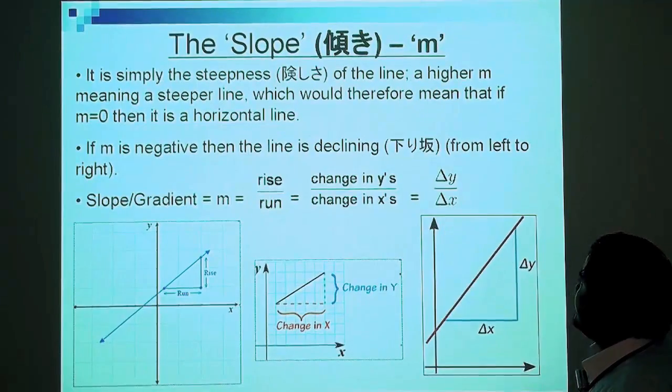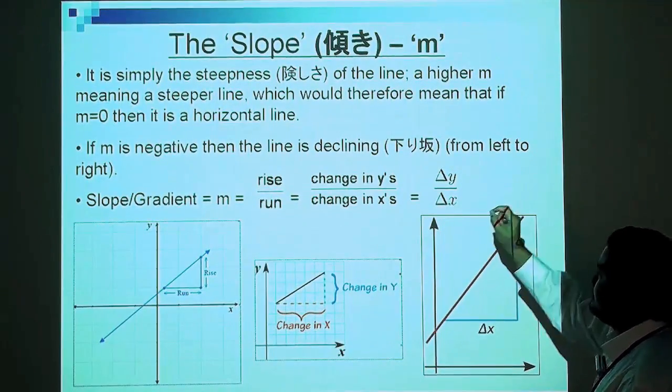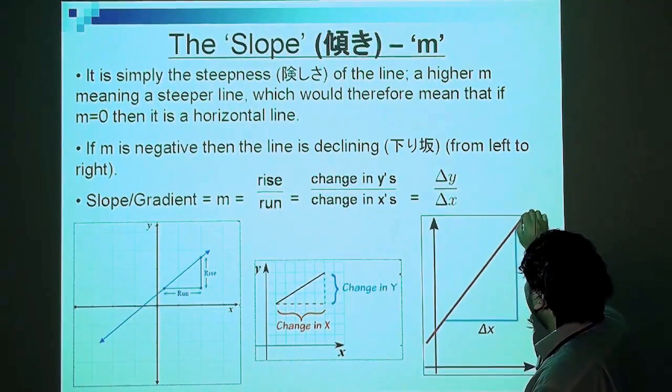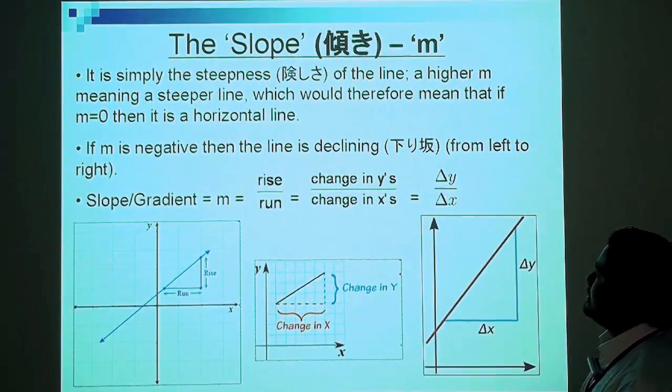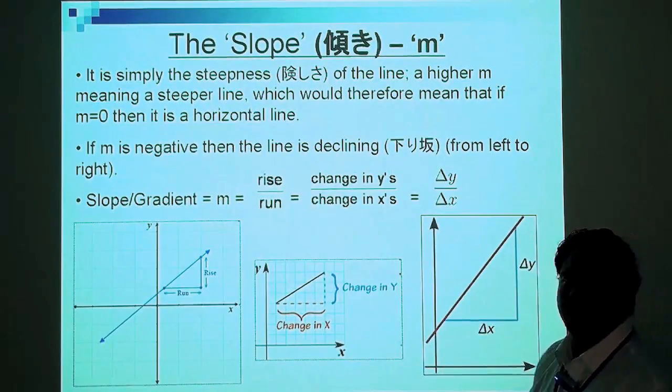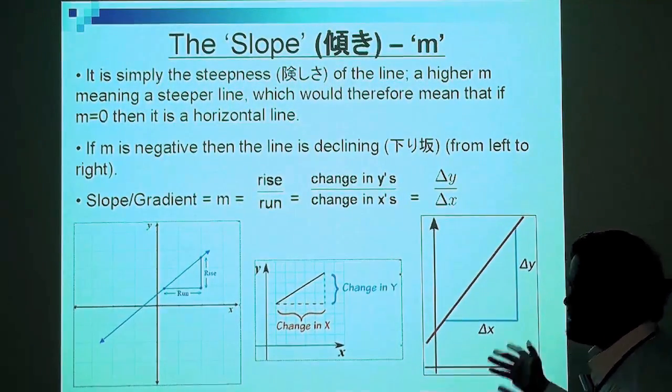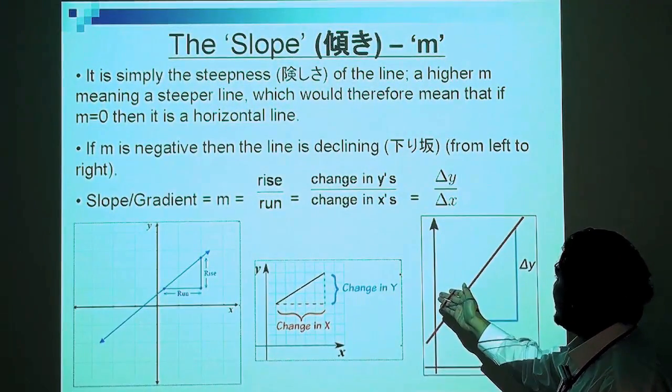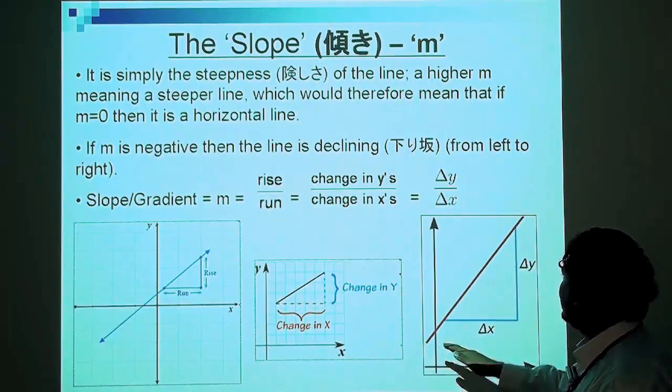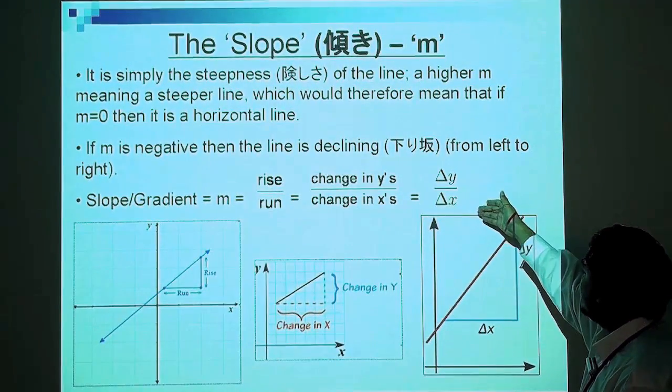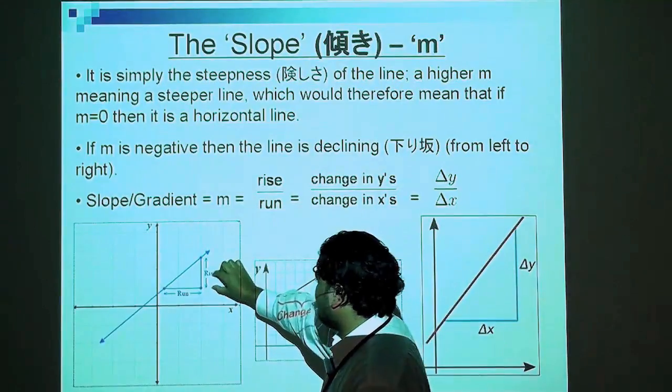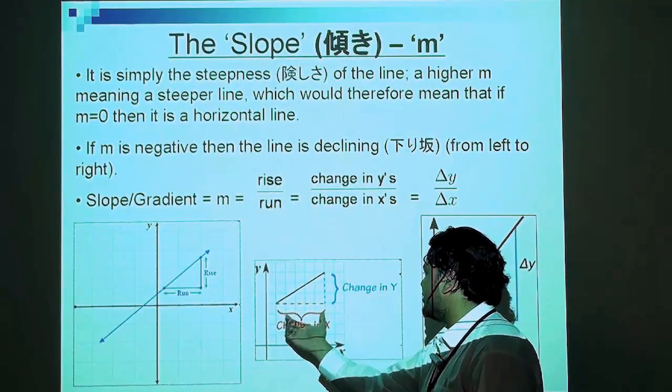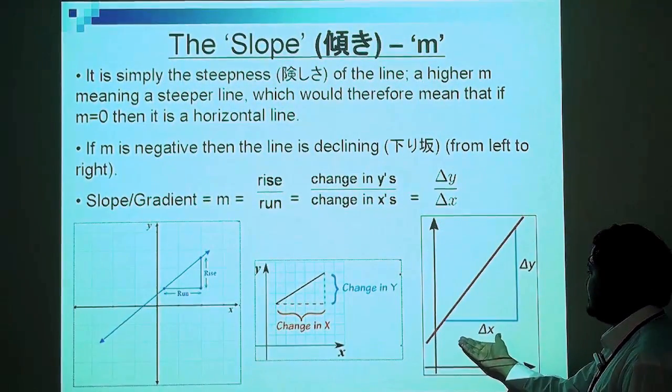If m is negative, then the line is declining from left to right. If you have a negative coefficient before x, instead of going up, your line will go down. What's the formula to find the slope or gradient? You may hear many terms: rise over run, the change in y divided by the change in x, or delta y over delta x. The rise divided by the run, change in y divided by change in x, or delta y divided by delta x.